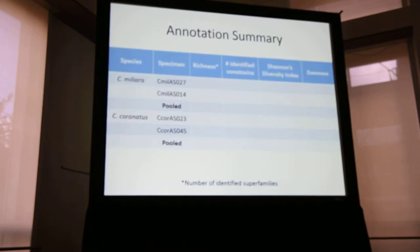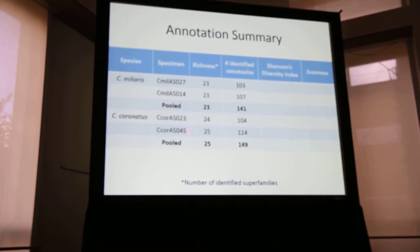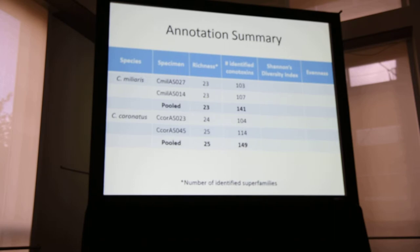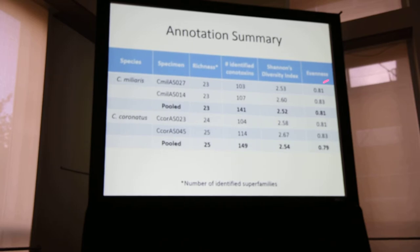Here I'm showing you a table summarizing the annotations I did for all individuals. You'll notice that all individuals and both species recovered about the same number of superfamilies, and the same thing for the total number of unique conotoxins annotated for each individual and each species — they're roughly the same. To get an idea of the diversity of the venom of each species, I calculated Shannon's diversity index for individuals and the pooled samples, and you can see that the diversity and evenness are pretty similar for all individuals and both species.